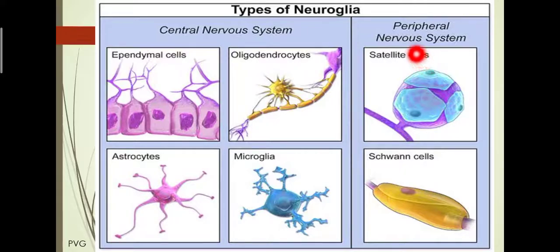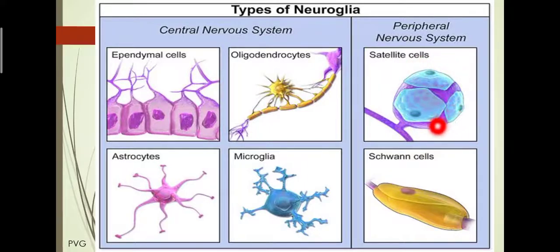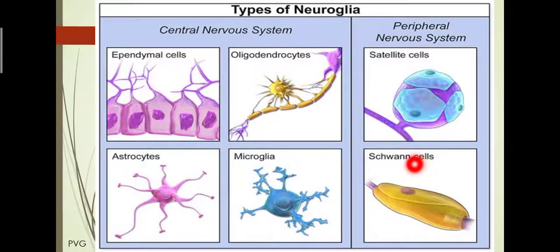The second type of neuroglia belongs to the peripheral nervous system. There are two types: satellite cells and Schwann cells. Satellite cells support the functions of neurons. Schwann cells are the most abundant cells of the peripheral nervous system and they produce myelin sheath around the medullated nerve fiber.